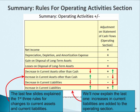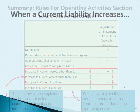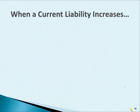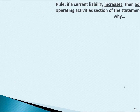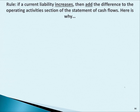A decrease in current liabilities means you must have paid off your liabilities, so cash also decreased. For the last rule — increases in current liabilities — the directions are both upwards. The rule is: if a current liability increases, then add the difference to the operating activity section.